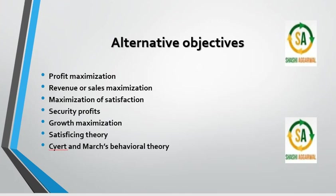These recent theories say that ownership and management are in separate hands. The owners don't manage the organization; managers do — as in a joint stock company, where shareholders and the board of directors manage the company. So other objectives may arise, such as revenue maximization, maximization of satisfaction, security, survival, growth maximization, satisficing theory, and behavioral theory.